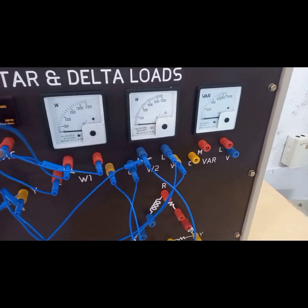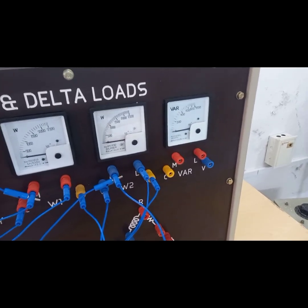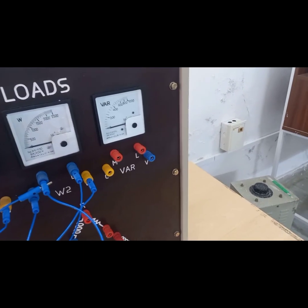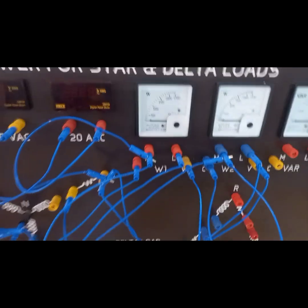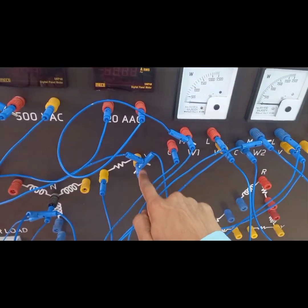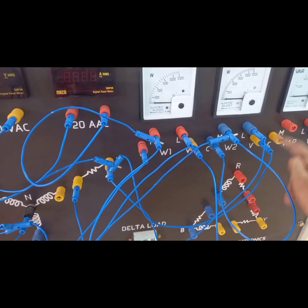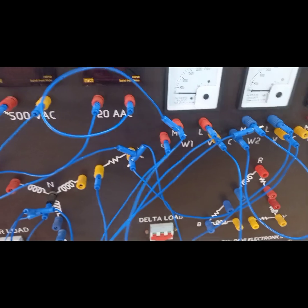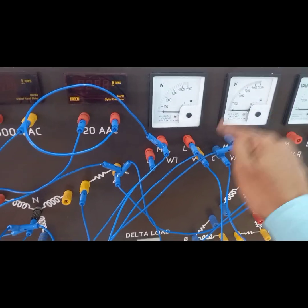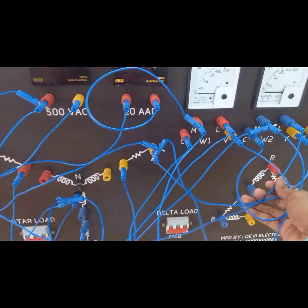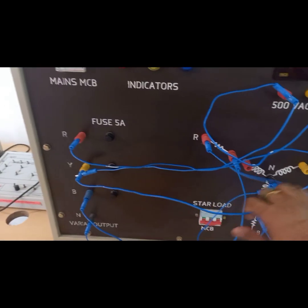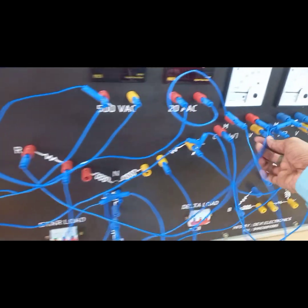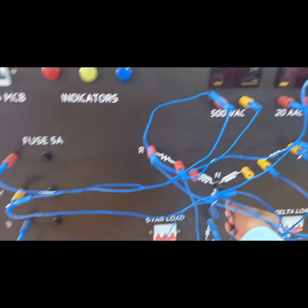The connection is somewhat difficult to understand. It is easy once you see that wattmeter 1 V is connected to Y, and Y is connected to wattmeter 2 V — so V1 to Y, then Y to V2. Y is directly connected to Y load. B is directly connected to wattmeter 2 M, and the neutral wire is connected to the center point.